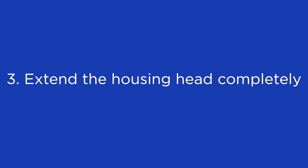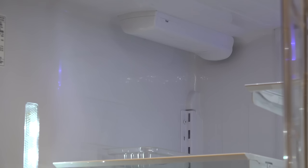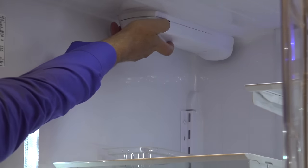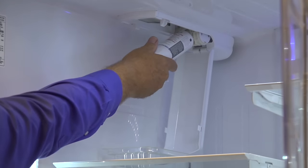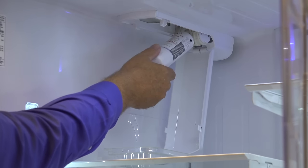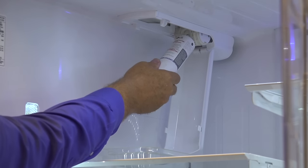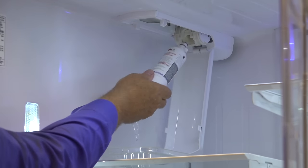Extend the water filter housing head completely. For pull down and swing out water filters, you may need to extend the water filter head from the housing completely before removing the filter. If you can't remove the filter after extending it from the housing, first pull it out until it stops, then remove it.